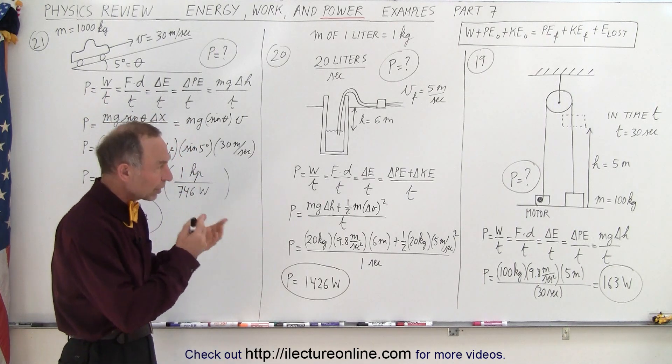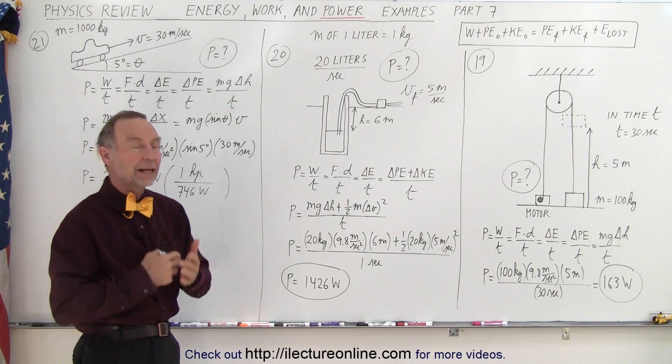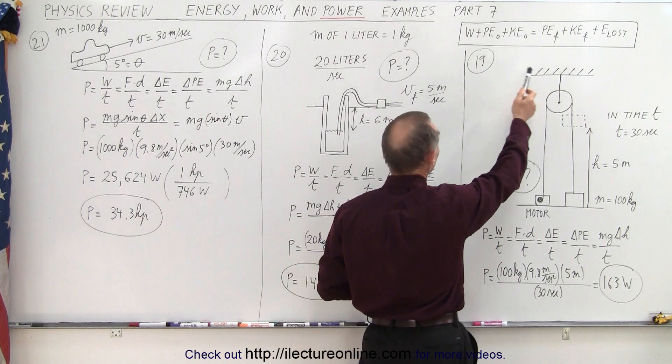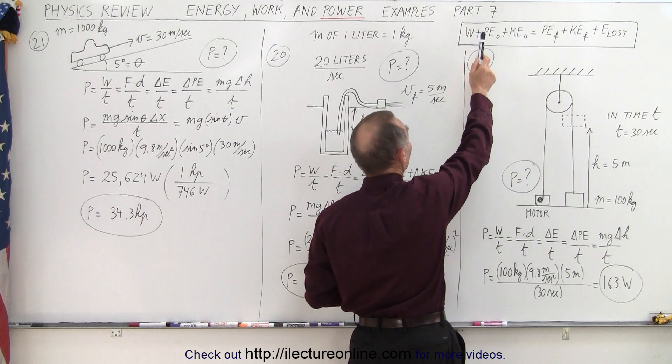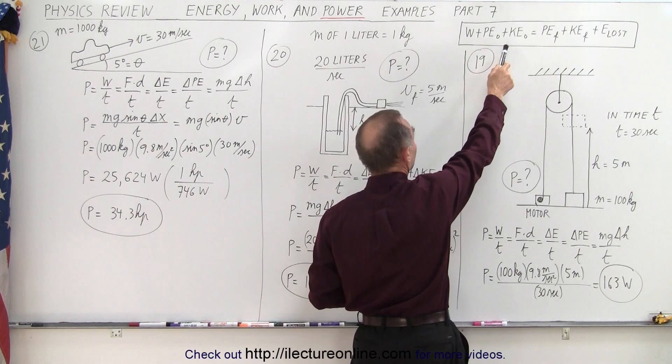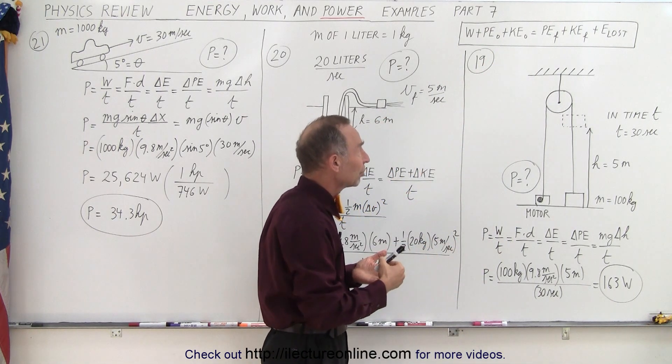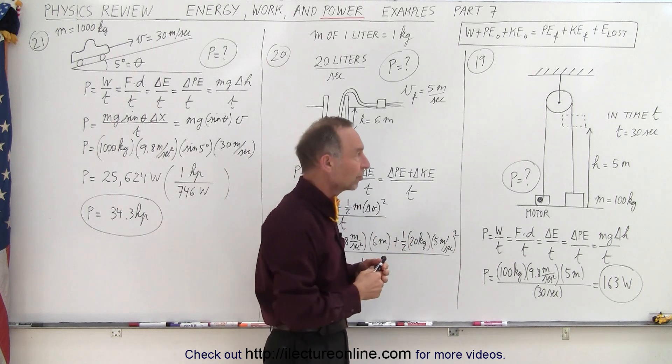So let's look at these three examples to see the commonality between them. We're still going to consider the equation right here. We have the work put into the system plus the potential energy initial plus the kinetic energy initial, which is going to be the final potential energy plus the final kinetic energy plus energy lost during the process.